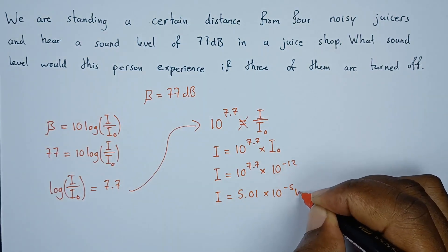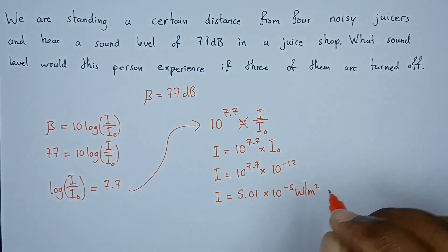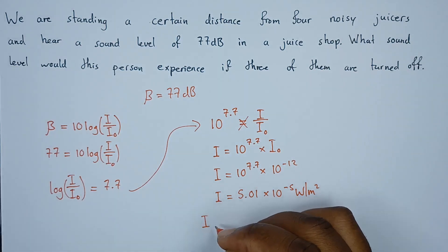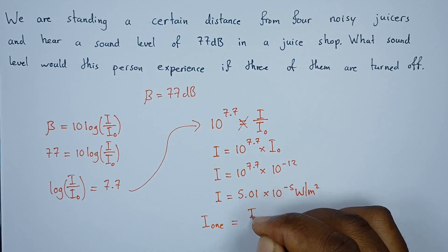Remember this is intensity for all four juicers, meaning that we're supposed to divide this intensity to get the intensity just for one juicer. The intensity for one juicer will equal the total intensity divided by the number of juicers.